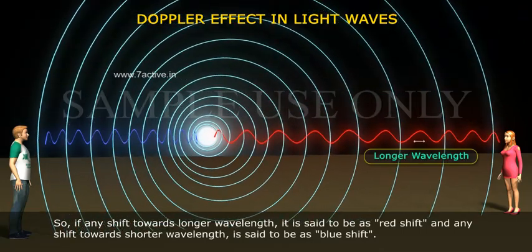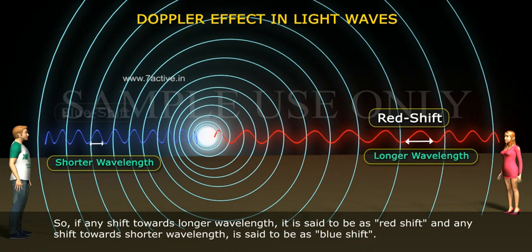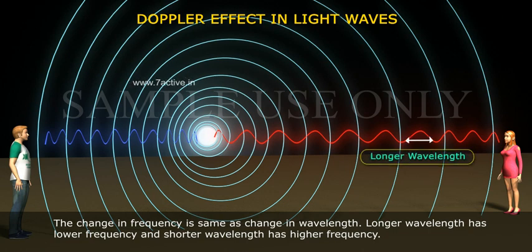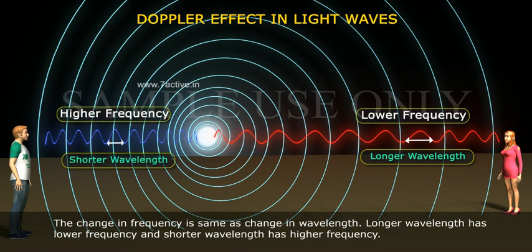Any shift towards longer wavelength is said to be red shift, and any shift towards shorter wavelength is said to be blue shift. The change in frequency is the same as change in wavelength. Longer wavelength has lower frequency, and shorter wavelength has higher frequency.